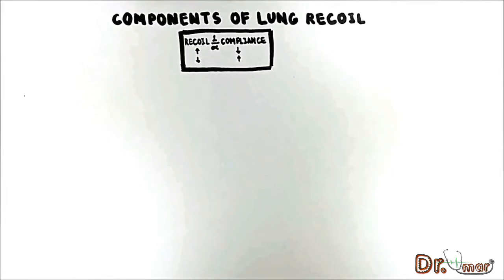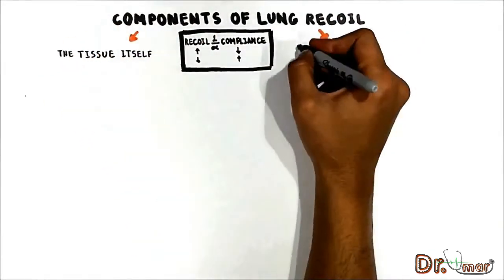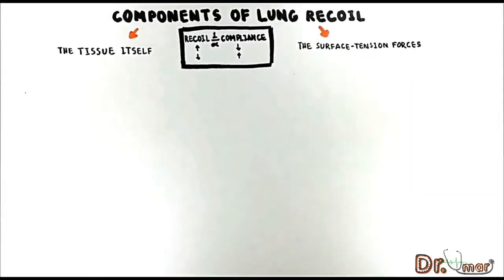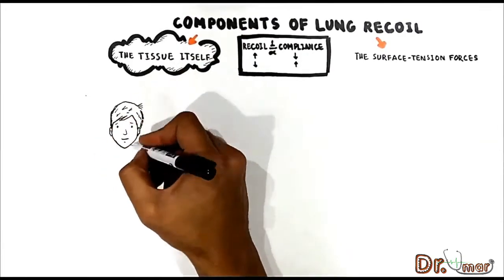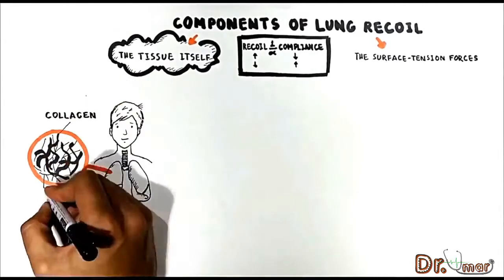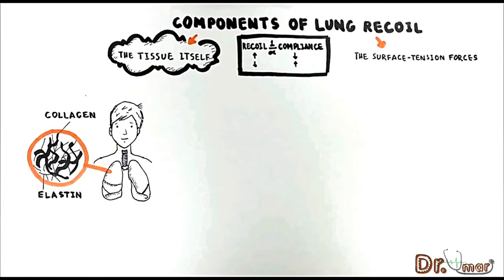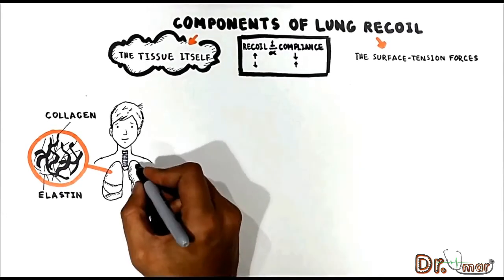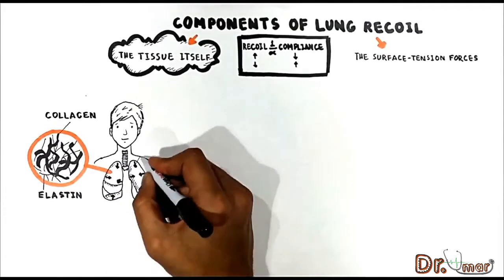Lung recoil is composed of two components: the tissue itself and the surface tension forces. The lung tissue is composed of collagen and elastin fibers, making it very elastic tissue. When the lung expands, this stretches the collagen and elastin fibers and increases the force of the lung which tries to collapse it, like a rubber band returning to its original shape after you stretch it.